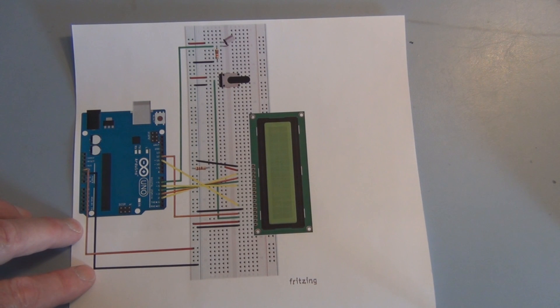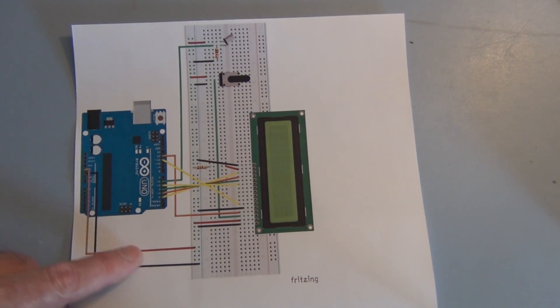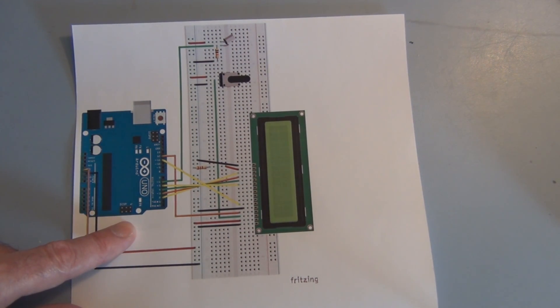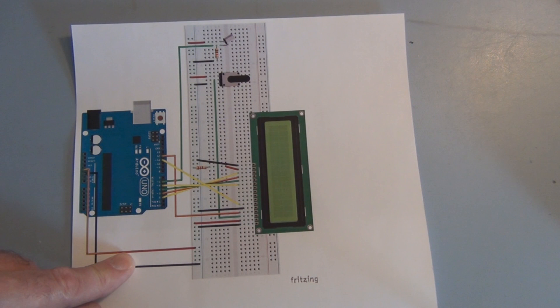So I used that Fritzing program to put together a little pictorial or schematic of the circuit with the wiring. And I don't know if anyone recalls back in the 60s, there used to be a toy called the Magic 8 Ball.